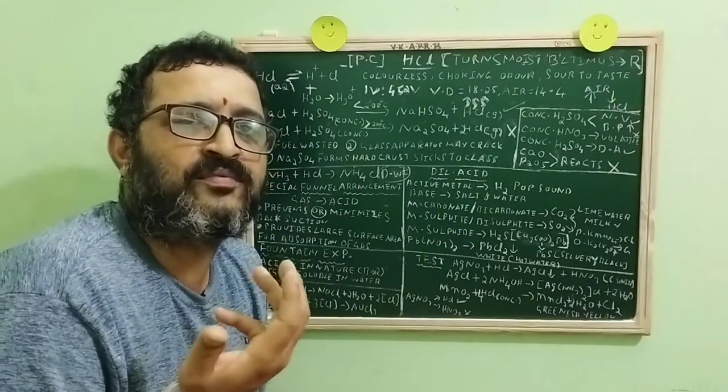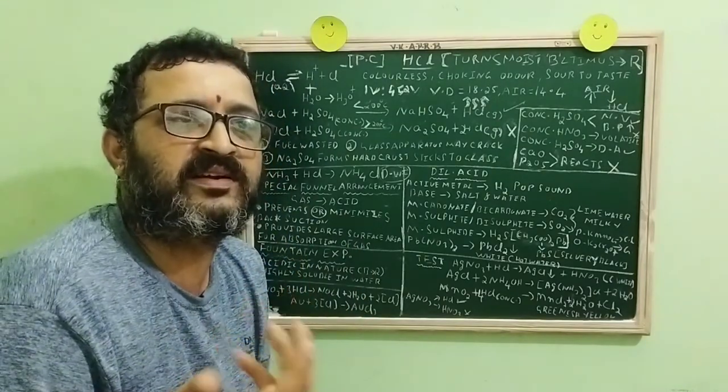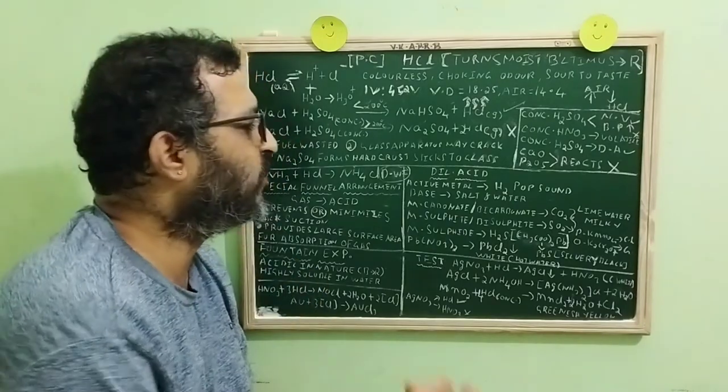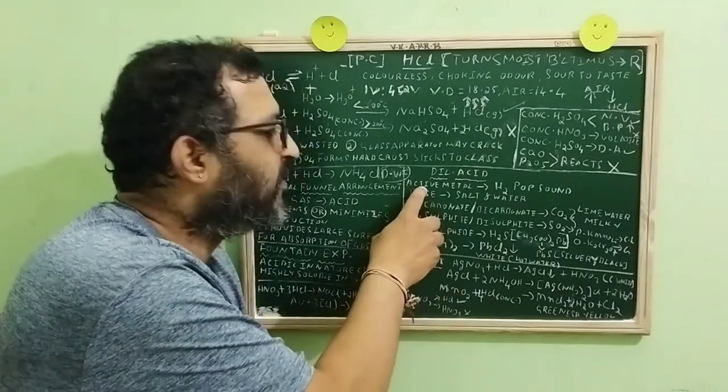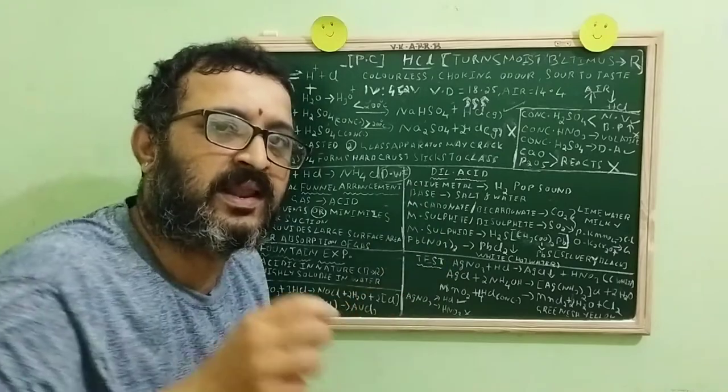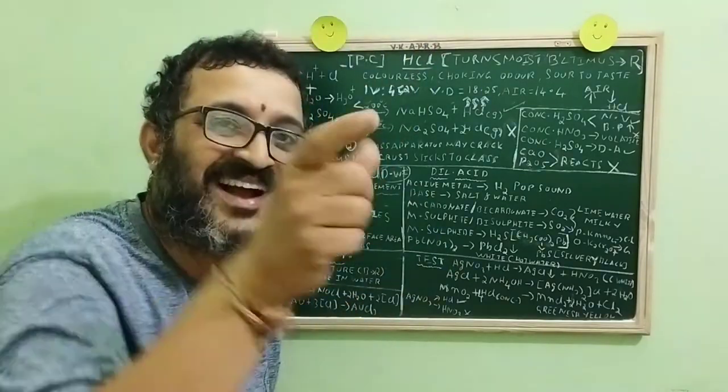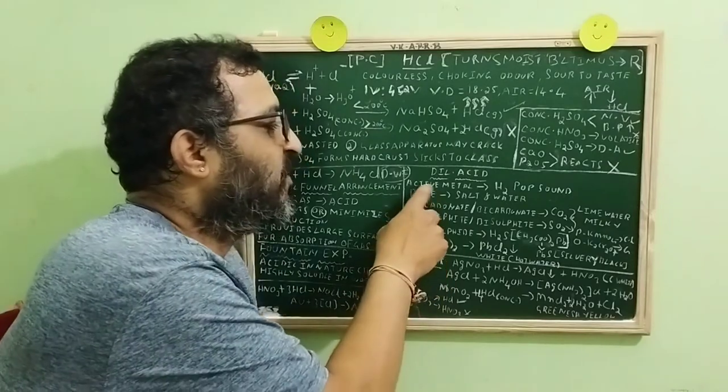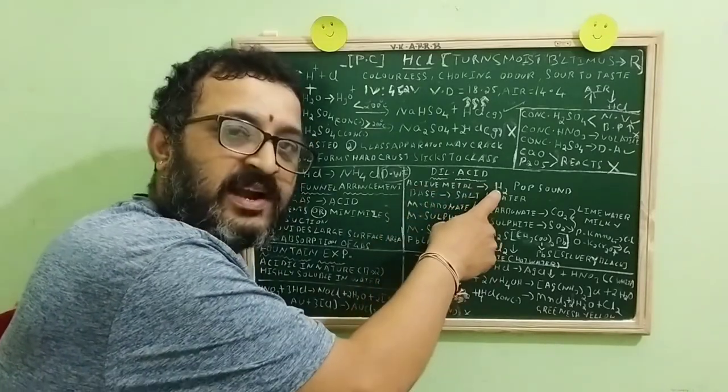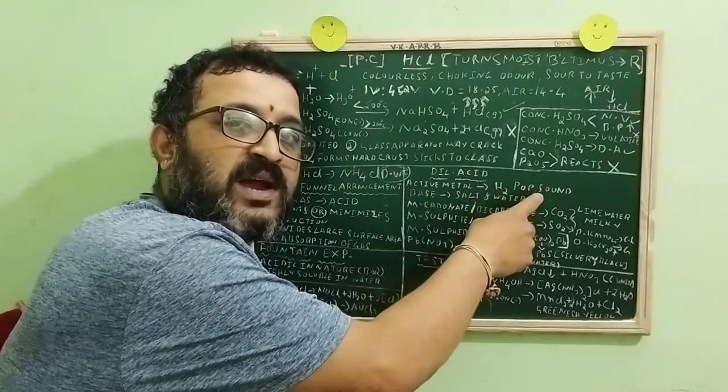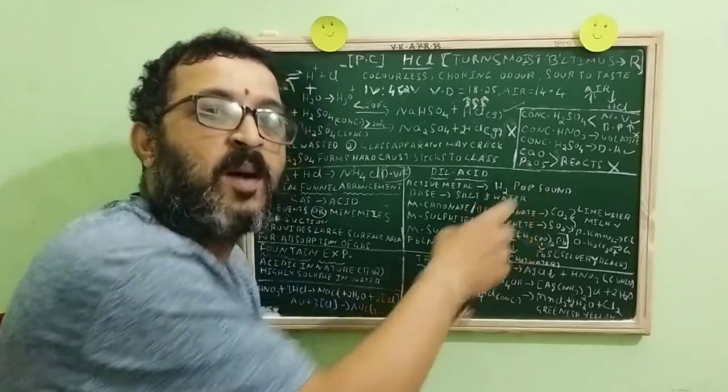Sir, what are the properties of all dilute acids? Yes, definitely. All dilute acids, in general, when they react with active metal, active metal is the one which is placed above hydrogen in the activity series. With active metal, they produce hydrogen, which can be confirmed by it burns with a pop sound.